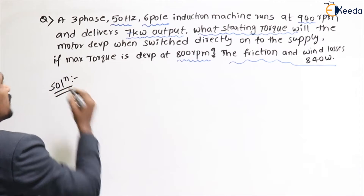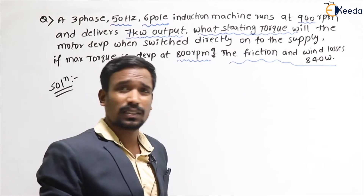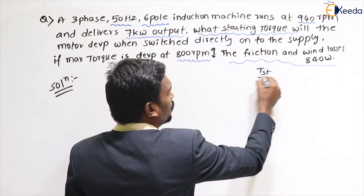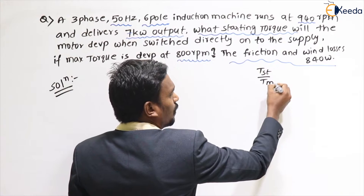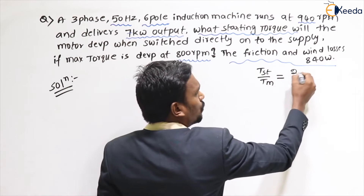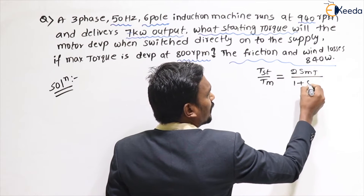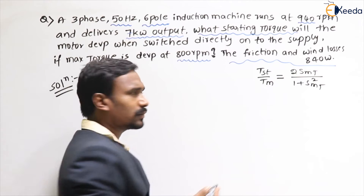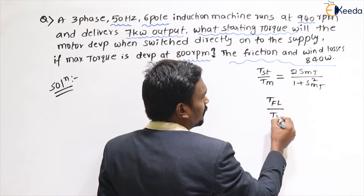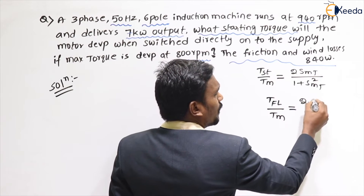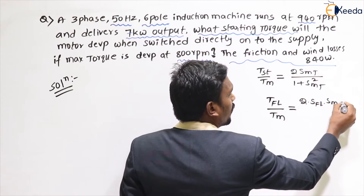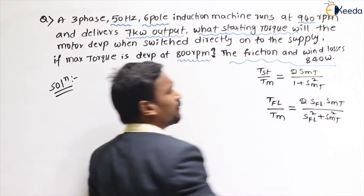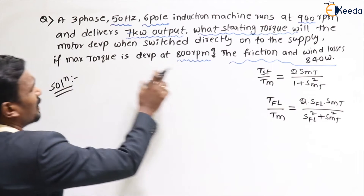This is a very different problem. The formula we generally know is: starting torque to maximum torque equals 2·s_mt divided by (1 + s_mt²). We also know the full load torque to maximum torque formula: 2·s_fl·s_mt divided by (s_fl² + s_mt²).